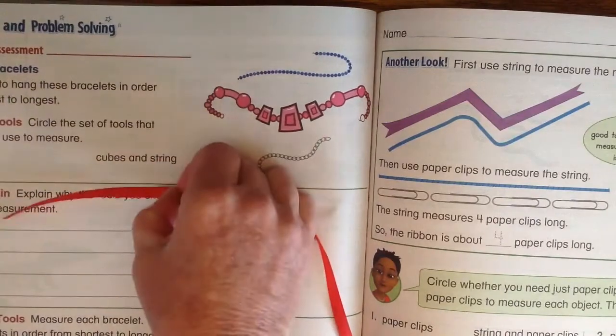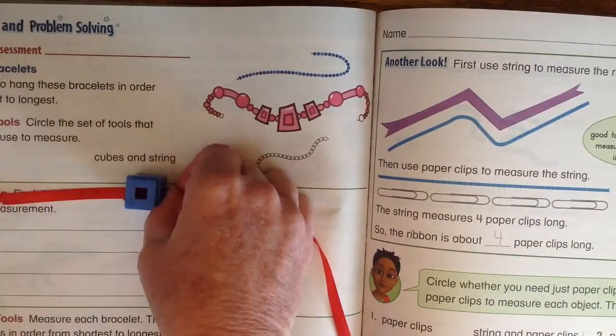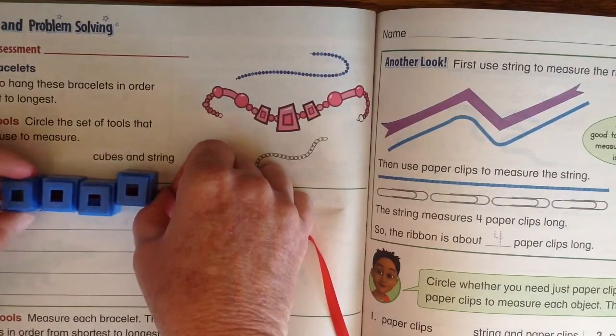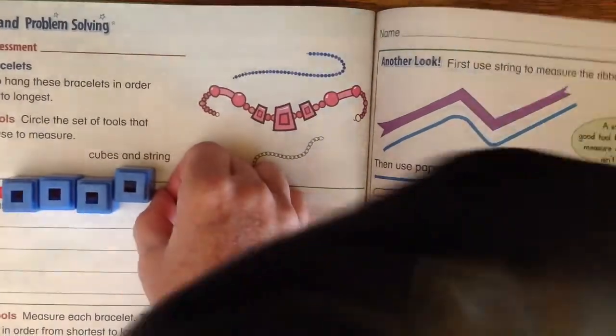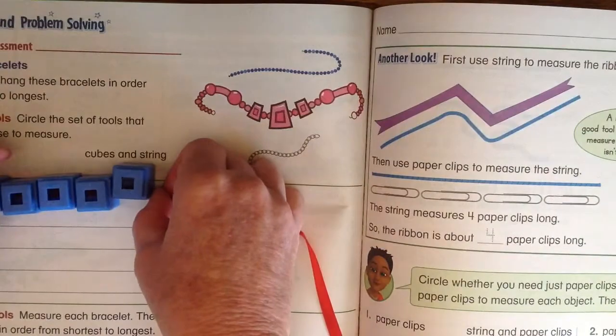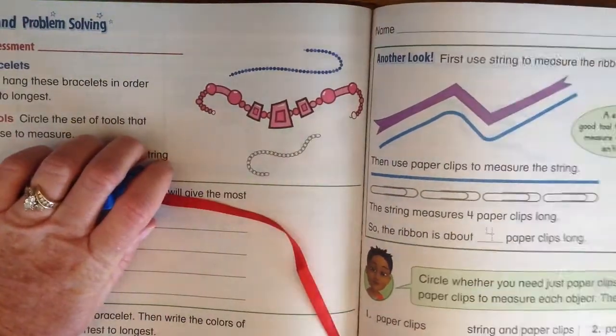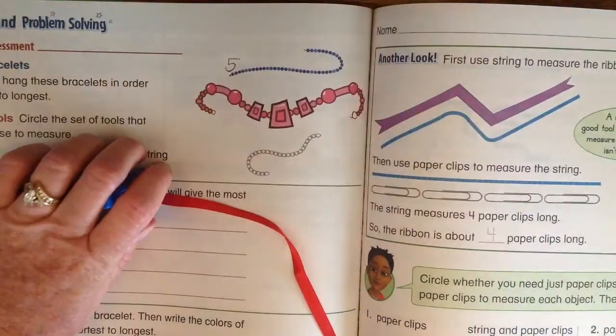So I use my cubes. One, two, three, four, and it looks like about five cubes long for the first one. So this one's about five cubes.